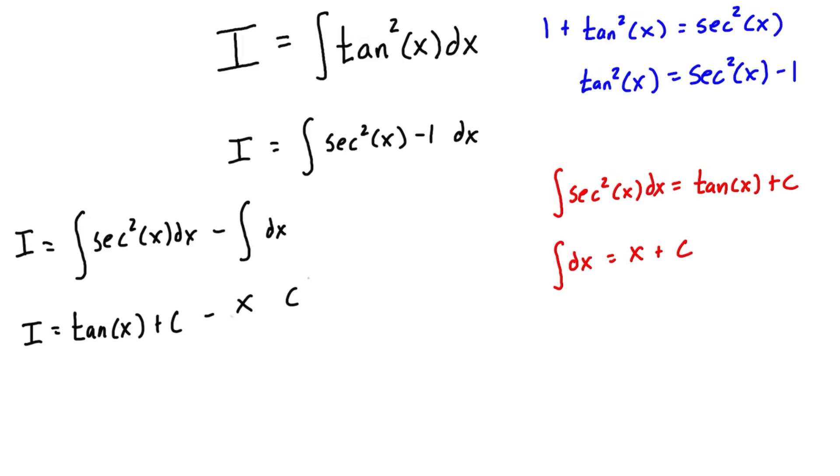But we have an arbitrary constant minus another arbitrary constant. And an arbitrary constant is just a number that we don't know, and one number that we don't know minus another number that we don't know is still a number that we don't know. So we can just combine those into one single arbitrary constant. We can rewrite our solution here as I = tan(x) - x + C, some arbitrary constant that we don't know. And there you go. So we've solved the integral I. We had the integral of tan²(x)dx, and the actual solution to this is tan(x) - x + C.